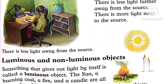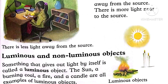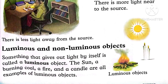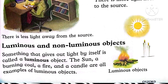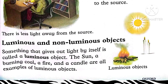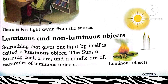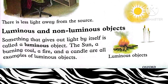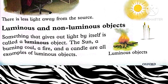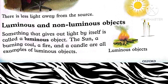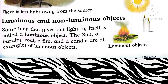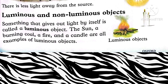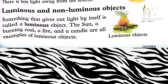The next topic is luminous and non-luminous objects. Luminous objects are things that produce their own light. The sun, burning coal, fire, and a candle are all examples of luminous objects.